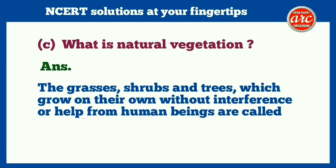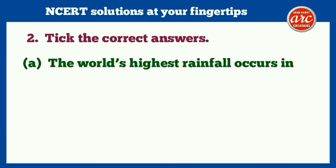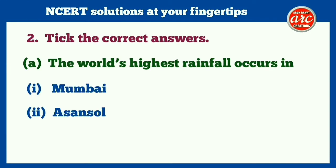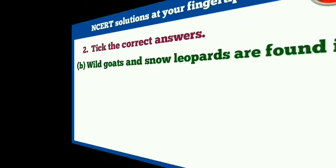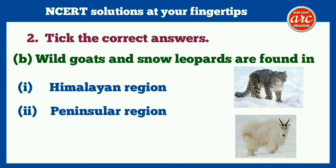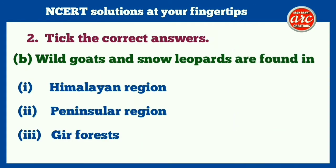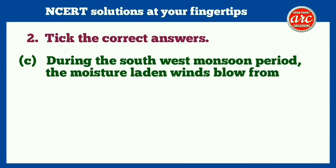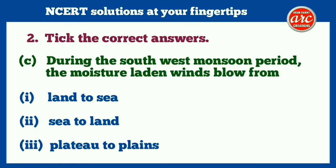Question number two — tick the correct answer. (a) The world's highest rainfall occurs in: (1) Mumbai, (2) Asansol, (3) Mawsynram. The correct answer is number three — Mawsynram. (b) Wild goats and snow leopards are found in: (1) Himalayan region, (2) Peninsular region, (3) Gir forest. The correct answer is the Himalayan region. (c) During the southwest monsoon period, the moisture-laden winds blow from: (1) land to sea, (2) sea to land, (3) plateau to plains. The correct answer is sea to land.